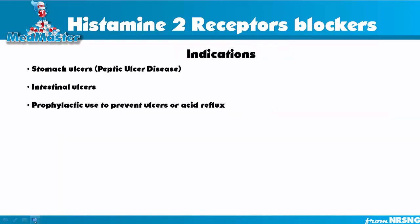As for the uses of histamine 2 receptor blockers — since they prevent the production of acid, they can be used in stomach ulcers, peptic ulcer disease, and intestinal ulcer. They are also widely used as a prophylactic to prevent ulcers or acid reflux.